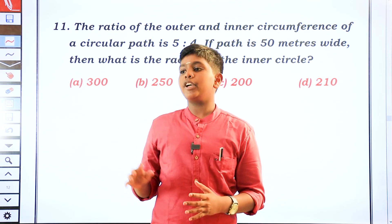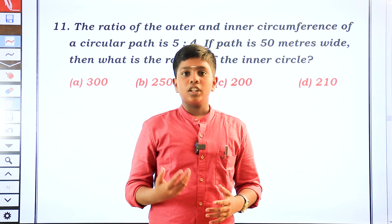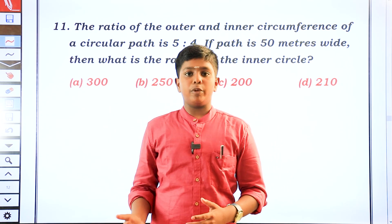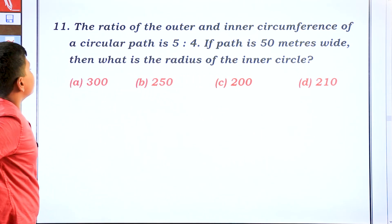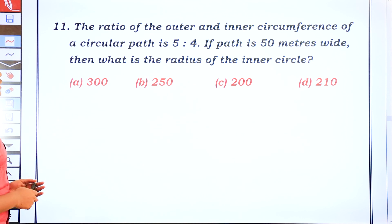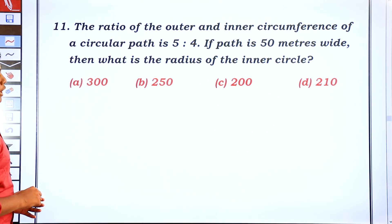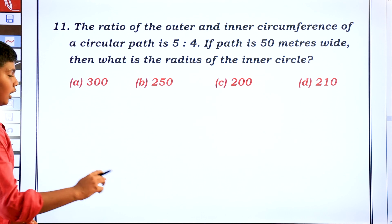The ratio of the outer and inner circumference of a circular bath is 5 is to 4. If the bath is 50 meters wide, then what is the radius of the inner circle?